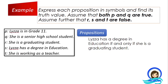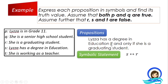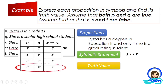For our third example: Liza has a degree in education if and only if she is a graduating student. Liza has a degree in education is proposition S, and she is a graduating student is proposition R. So the symbolic statement is S if and only if R. Since both S and R are false, they have the same truth value, and therefore the biconditional statement is true.